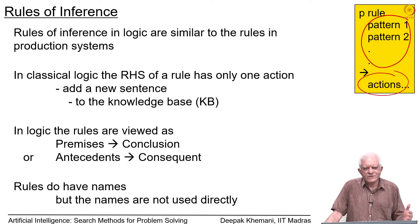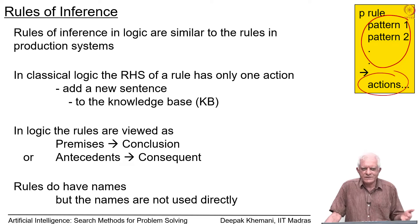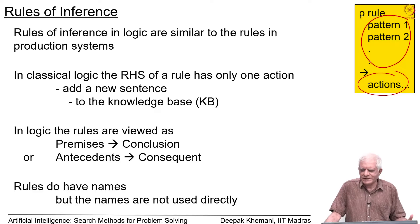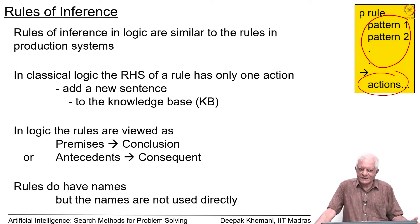If you recall the OPS5-like engine, it said there was something called a conflict set, in which the rule name followed by the timestamps of the working memory elements were added. Here, the rule name is kind of behind the scenes most of the time. It may be given as a justification, but it is not part of the processing.